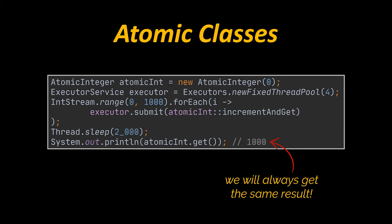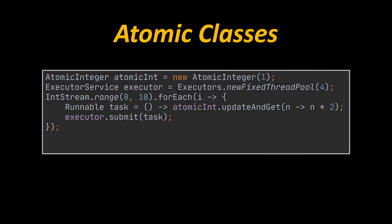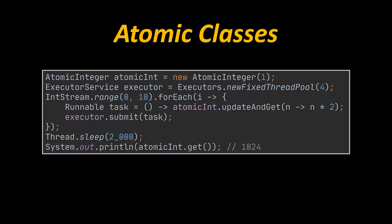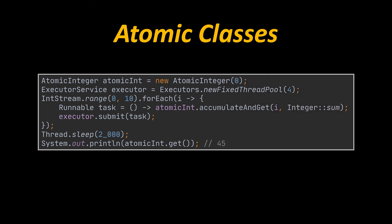In addition, we have the method updateAndGet, which accepts a lambda expression that performs arbitrary arithmetic operations on the input. In the example, we update our input by multiplying two by itself ten times concurrently — two to the power ten — leading to an output of 1024. Additionally, accumulateAndGet accepts a functional interface of type IntBinaryOperator; in the example it sums all values from 0 to 10 concurrently.